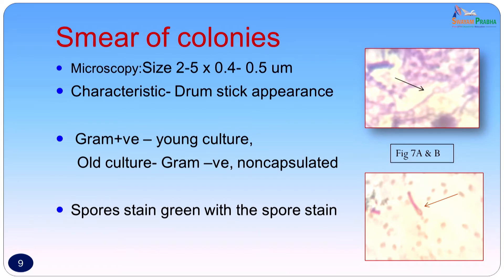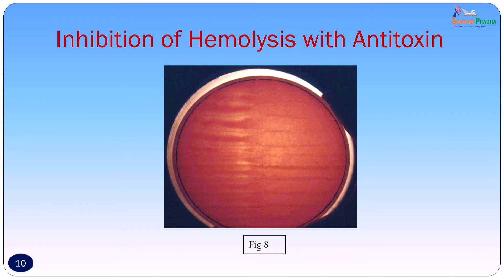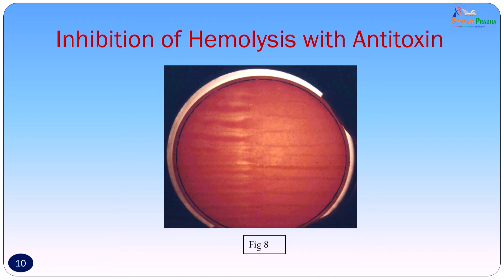When using the spore stain with malachite green and safranin, the spore took up the green stain while the bacterial body took up the pink stain. To confirm the isolate was Clostridium tetani, a blood agar plate was taken. On half the plate antitoxin was spread, and streaks of the organism were made across the plate. On the half with no antitoxin, the beta hemolysis was inhibited, while the half with the antitoxin showed beta hemolysis. Swarming was also inhibited around the half with no antitoxin, confirming that the organism was Clostridium tetani.